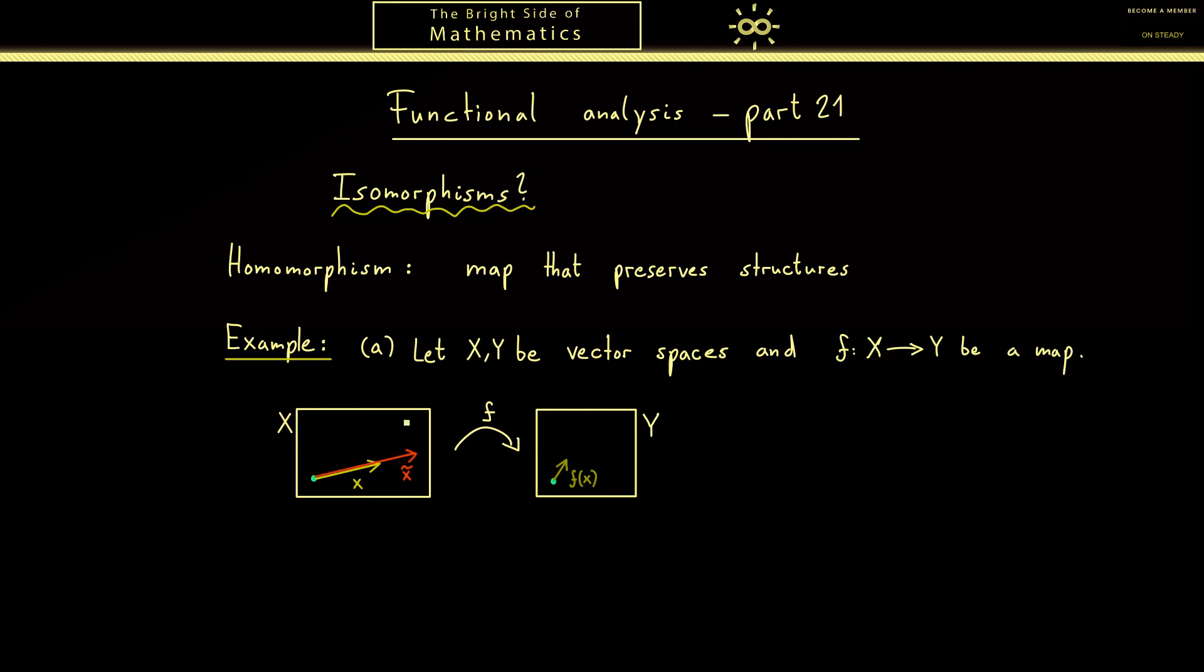So conserving the scalar multiplication means if we consider a new vector x tilde which is just a scaled x, then this new vector is also mapped to the same line as f(x). And of course it should have the same scaling factor. Putting this idea into formulas then gives us f(λx) equals λ times f(x). Please note on the left hand side we have the scalar multiplication in X and on the right hand side we have the scalar multiplication in Y. Hence this preserving nature also includes some translating from left to right.